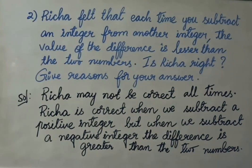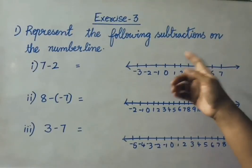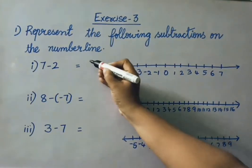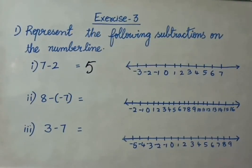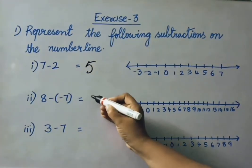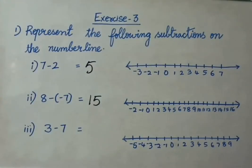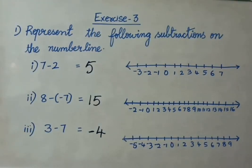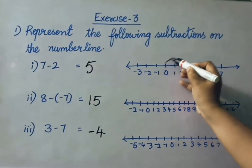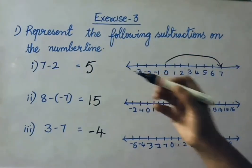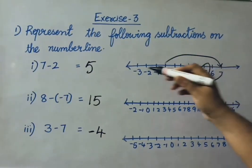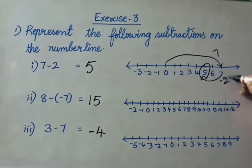For example, 8 minus of minus 3 — that means 8 plus 3, that equals 11, so that answer is greater than the two integers. See Exercise 3, first sum: represent the following subtractions on the number line. 7 minus 2 is 5. 8 minus of minus 7 — that means 8 plus 7, that equals 15. 3 minus 7 gives answer minus 4. For 7 minus 2 on the number line: mark 0 onwards 7, then go backward 2 numbers — 1, 2 — so the answer is 5.